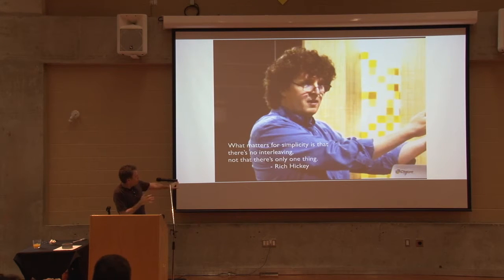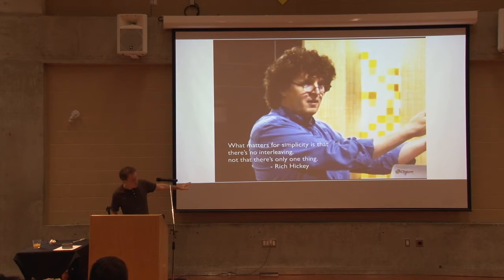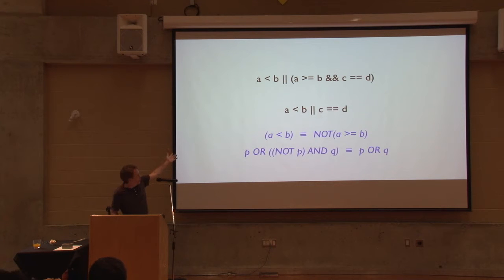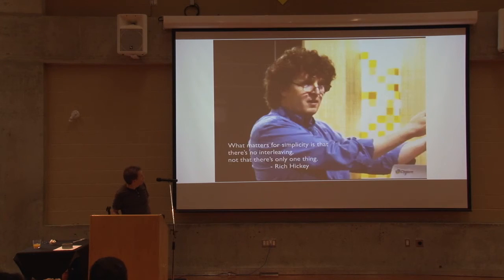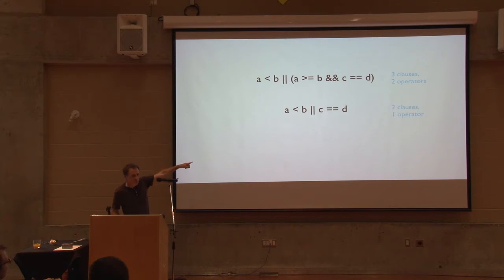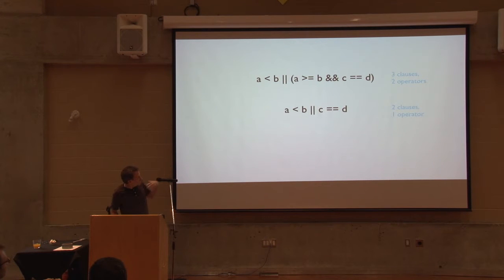But that kind of conflicts with what we saw earlier with that simplified expression. The reason the lower one is simpler is it has fewer parts. So let's count them - let's do what he said we shouldn't do. The top one: I see three clauses and two operators. The second one: I see two clauses and one operator. And I think it actually is about counting things in that sense.